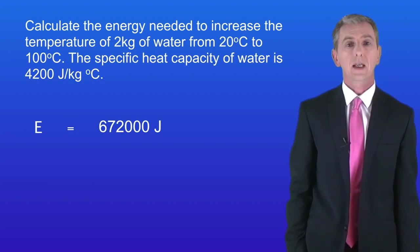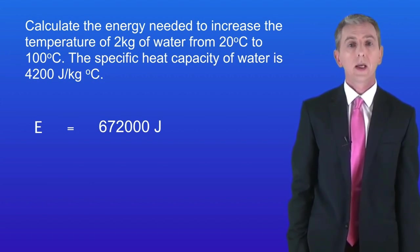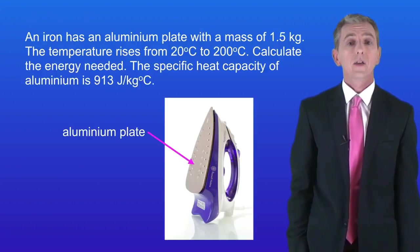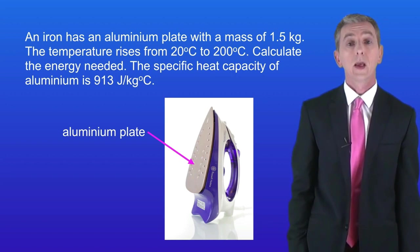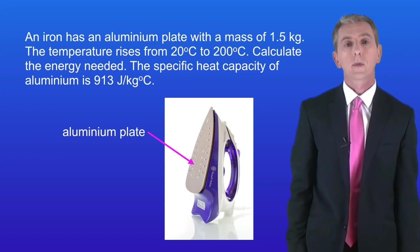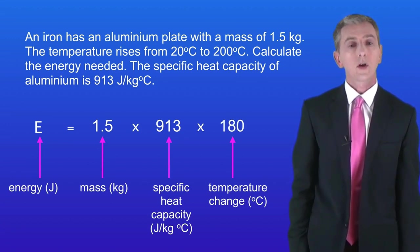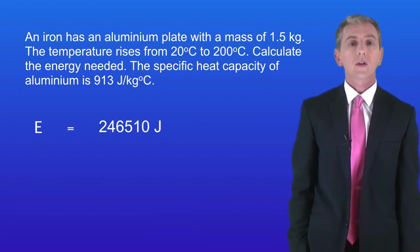The one thing that students tend to get wrong in this calculation is not using the temperature change. Some students simply put in the final temperature but that's incorrect — you have to work out the temperature change. Here's another question to try: an iron has an aluminium plate with a mass of 1.5 kilograms. The temperature rises from 20 degrees Celsius to 200 degrees Celsius. Calculate the energy needed. The mass is 1.5 kilograms, the specific heat capacity of aluminium is 913, and the temperature change is 180 degrees Celsius. This gives us a value for the energy needed of 246,510 joules.